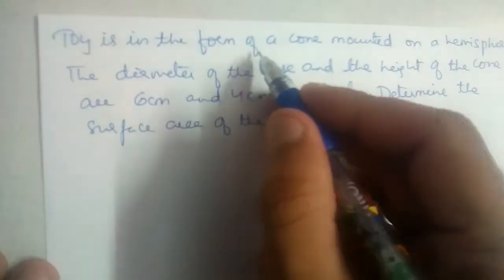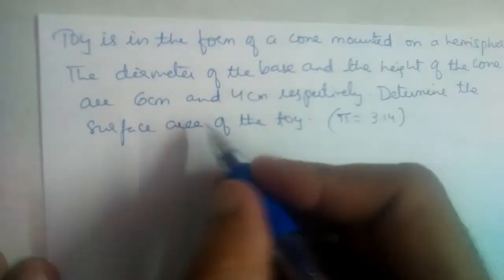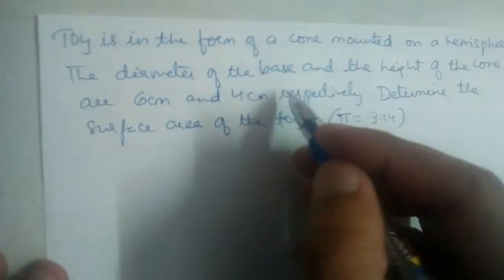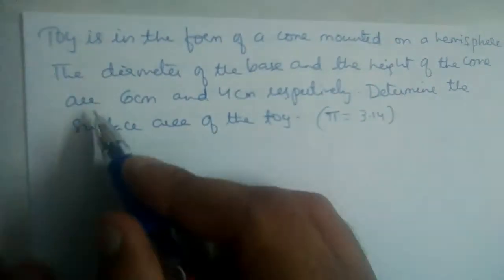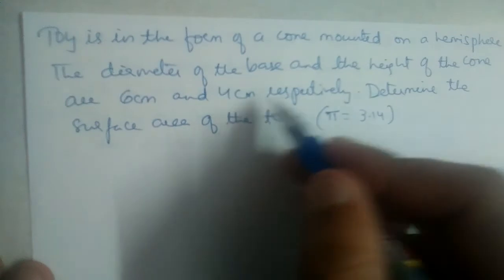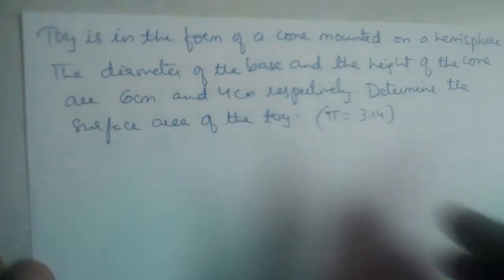A toy is in the form of a cone mounted on a hemisphere. The diameter of the base and the height of the cone are six centimeters and four centimeters respectively. Determine the surface area of the toy.